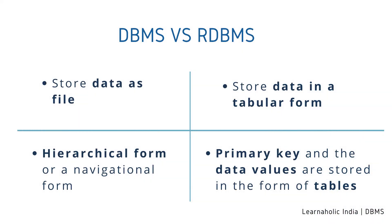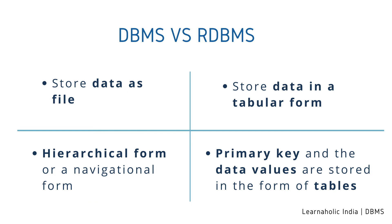Now let's see the difference between DBMS and RDBMS. Although both are used to store information in a physical database, there are some remarkable differences between them. DBMS applications store data in a file, whereas RDBMS applications store data in a tabular form. In DBMS, data is generally stored in either a hierarchical form or a navigational form, whereas in RDBMS, the tables have an identifier called primary key and the data values are stored in the form of tables.